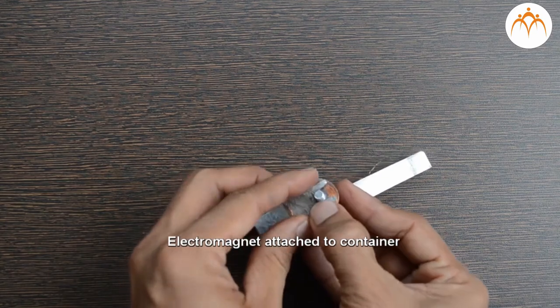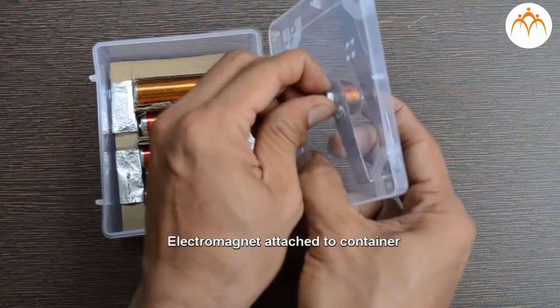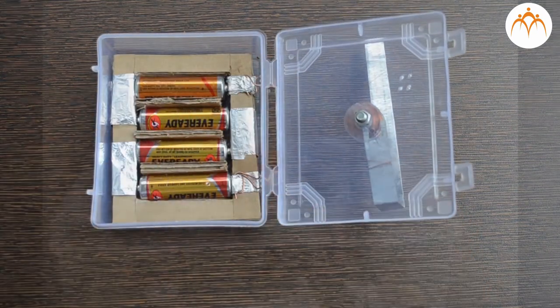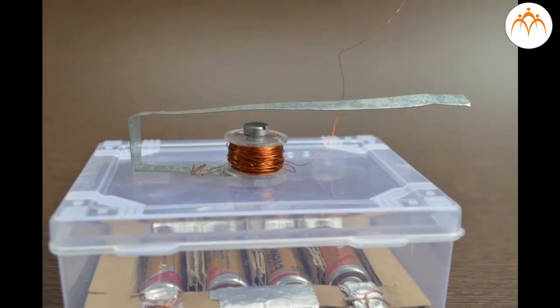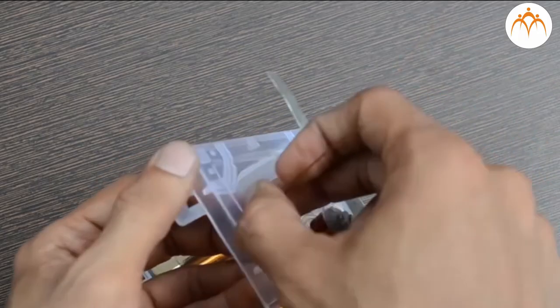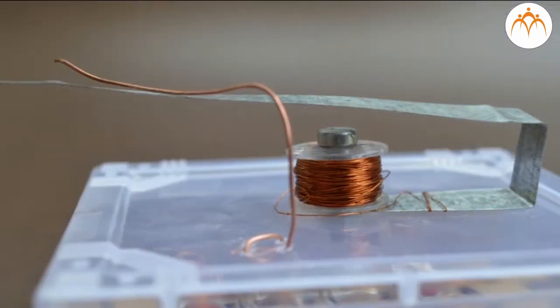One end of this wire is connected to the strip while the other end is connected to the terminal of the 6 volt power supply. Another copper wire is placed near the strip and its end connected to the battery terminal.